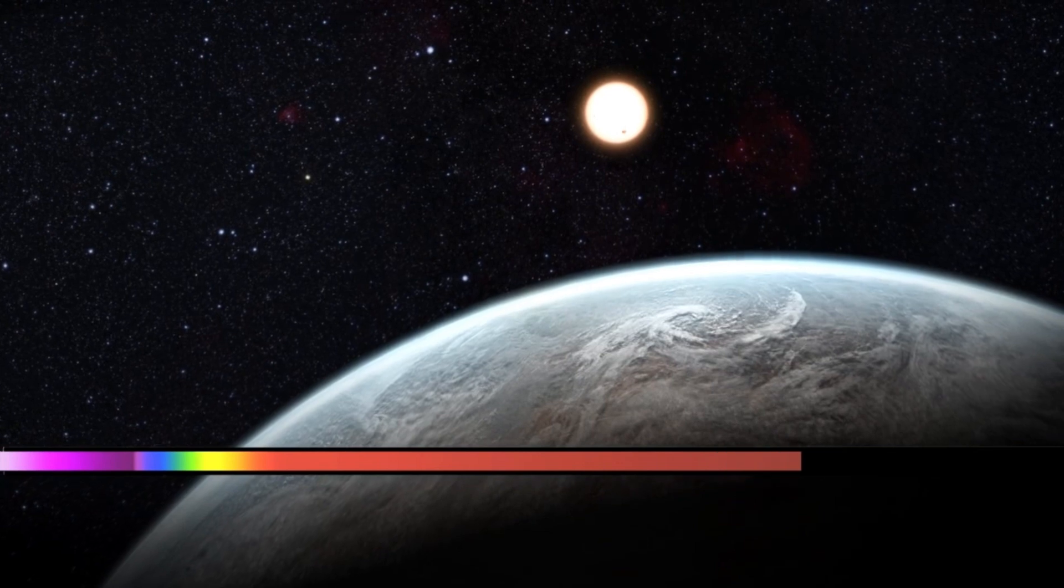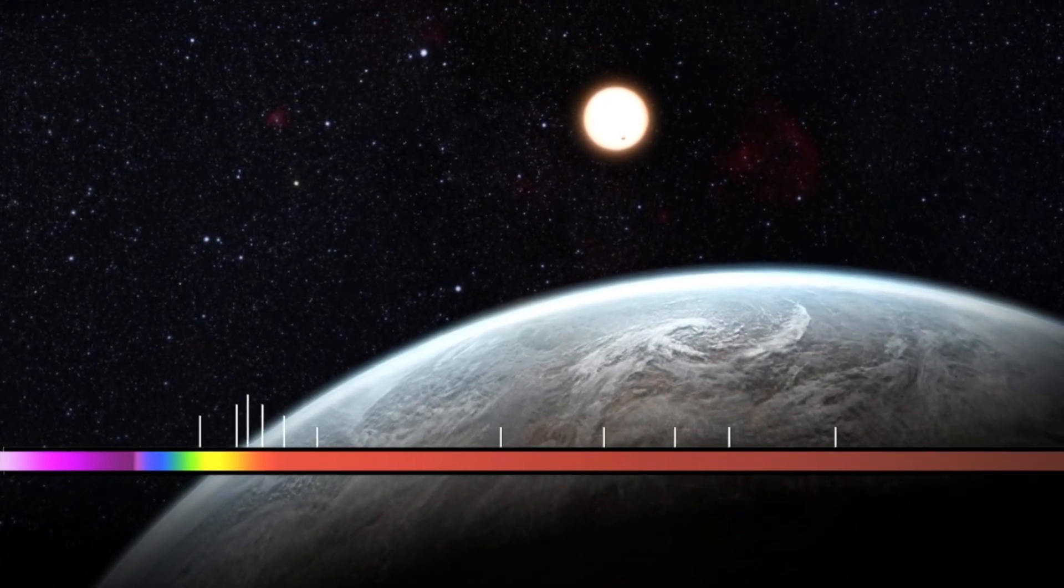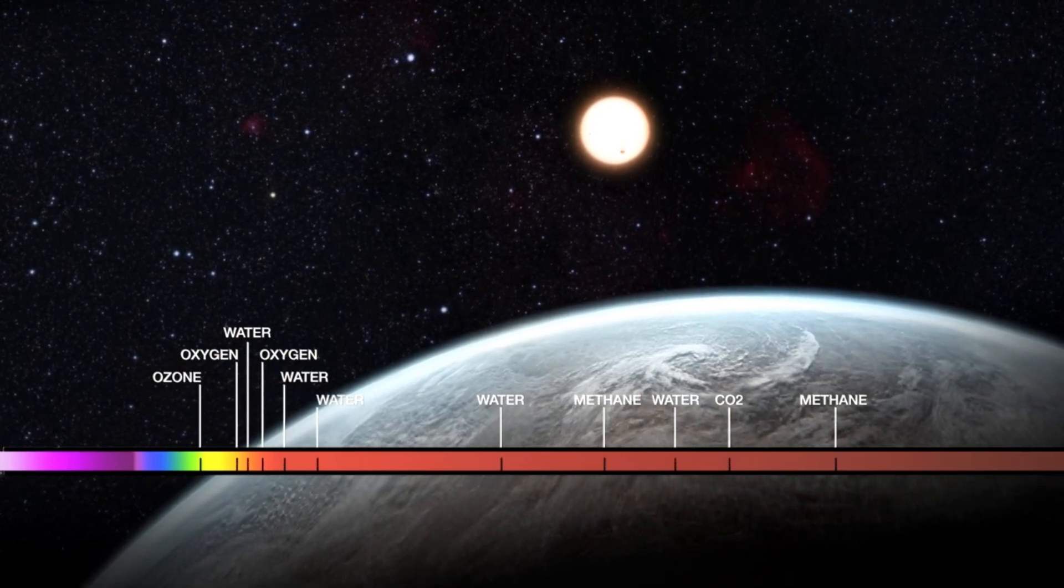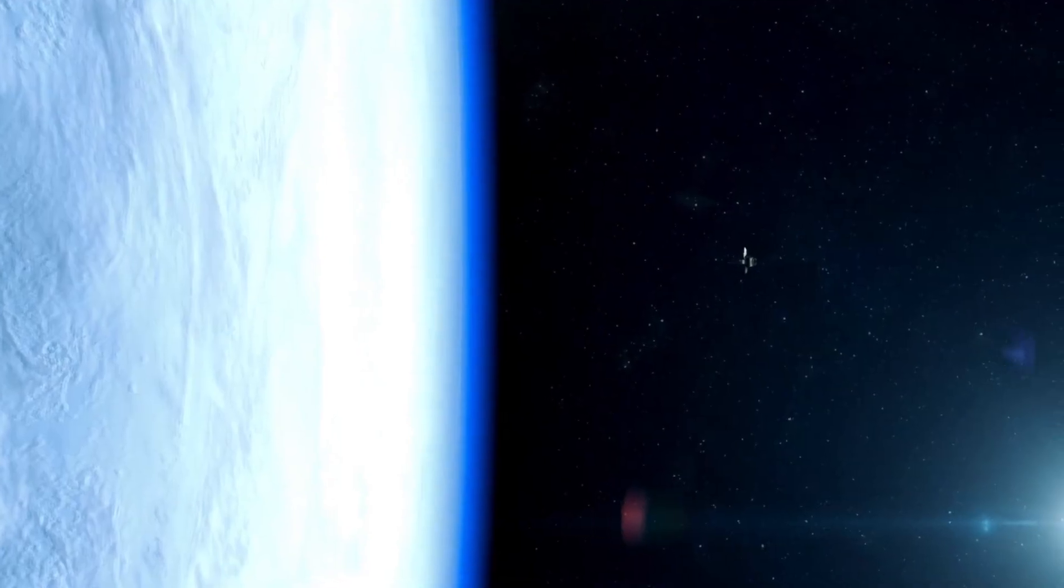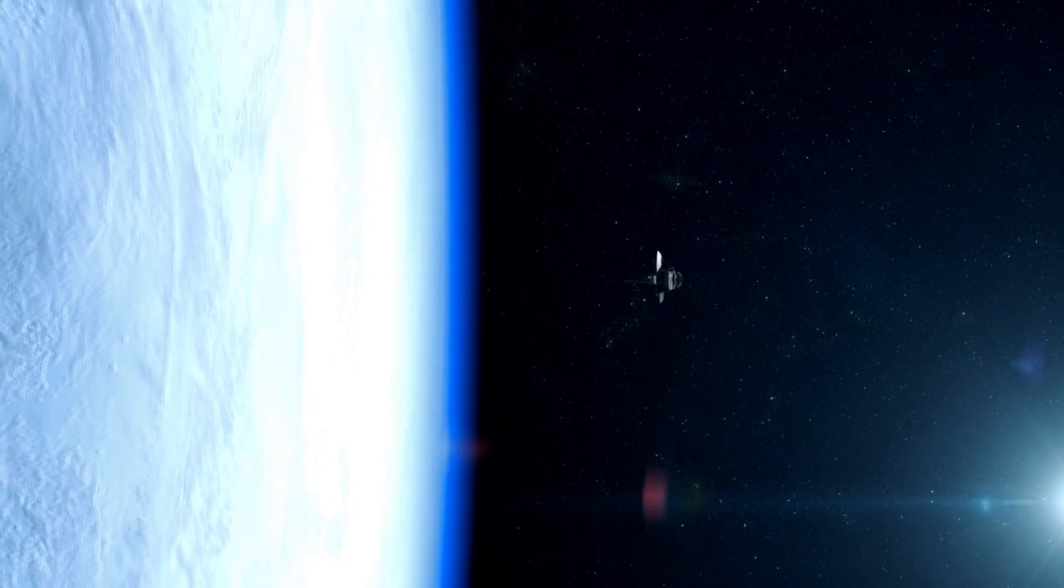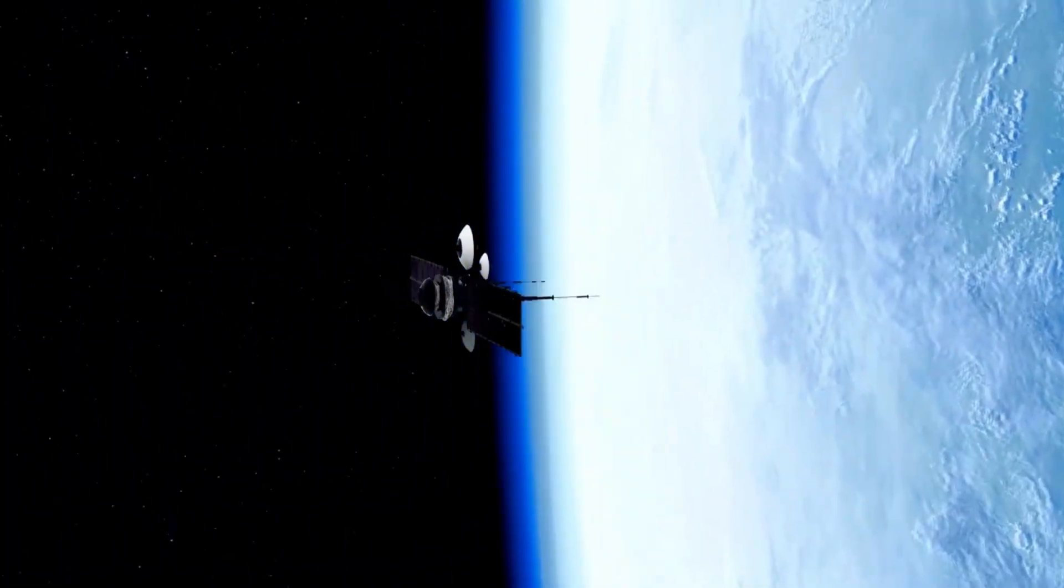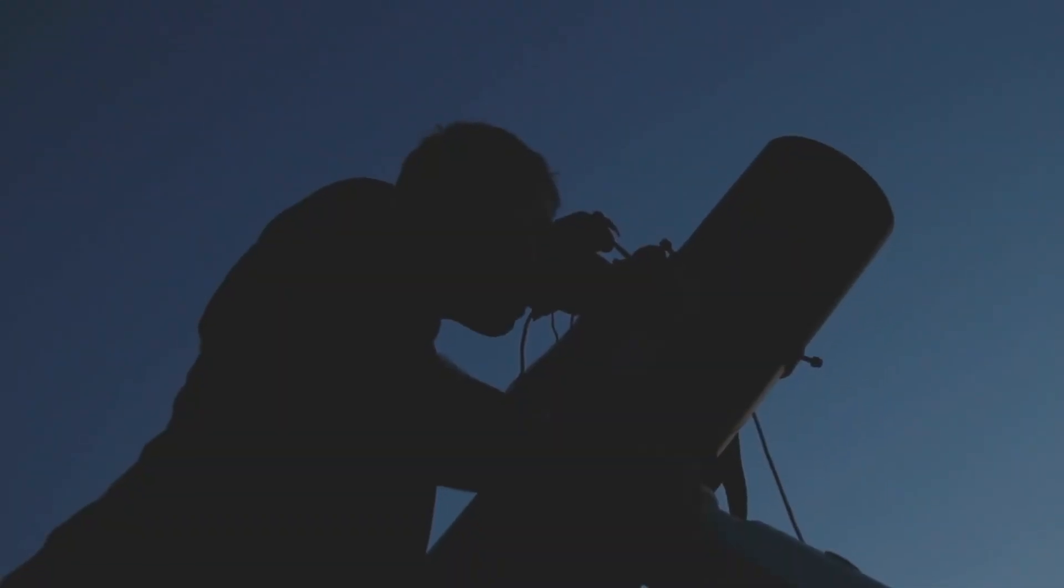With an estimated mass around 20 times that of our Sun, it stands as one of the largest and most luminous stars ever observed. Its true scale is staggering. If placed at the center of our solar system, Betelgeuse's outer layers would engulf the orbits of Mercury, Venus, Earth, Mars, and even extend past that of Jupiter.